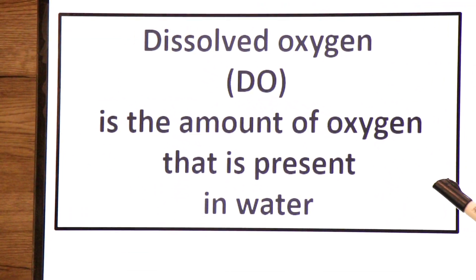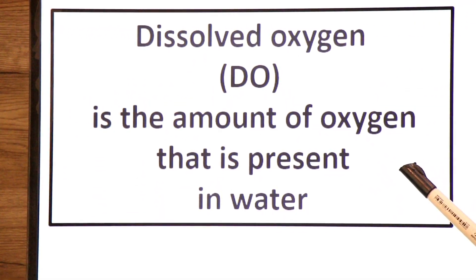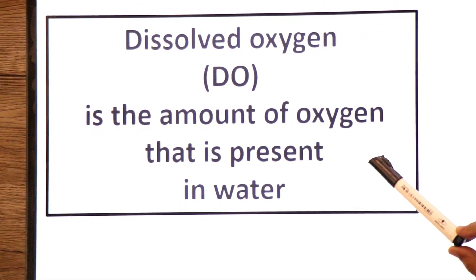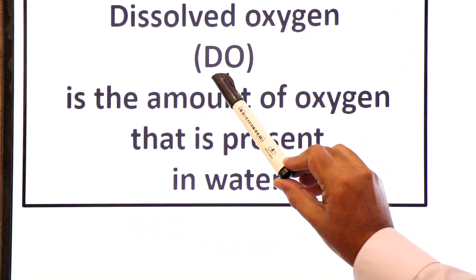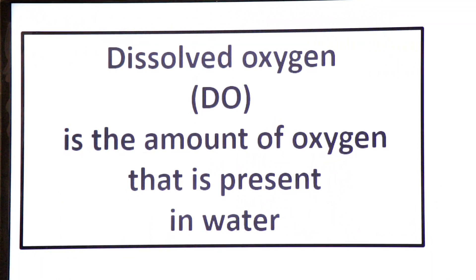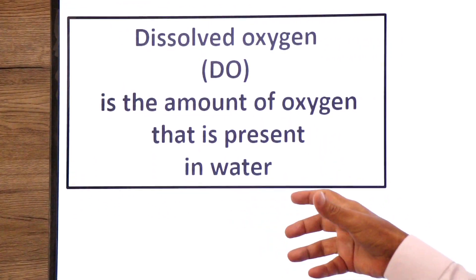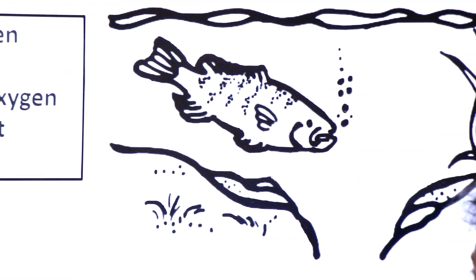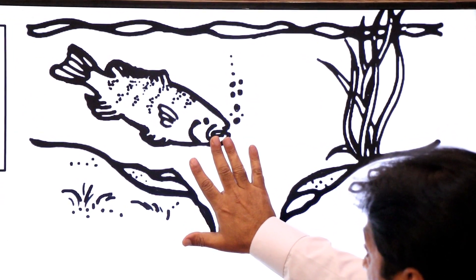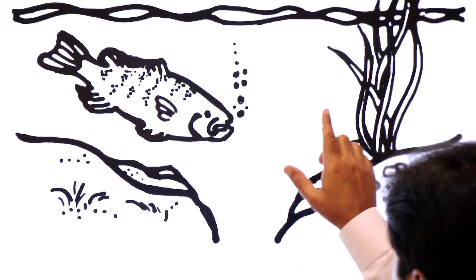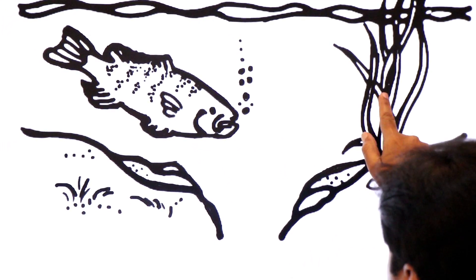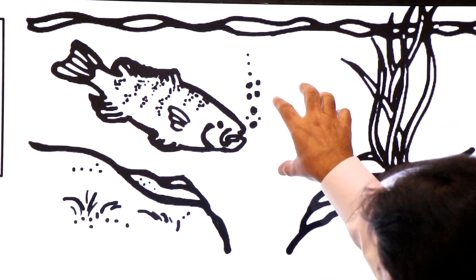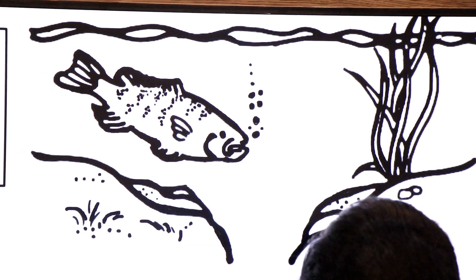And dear students, as I told you for fishes, they take dissolved oxygen. The oxygen in water is called dissolved oxygen. Dissolved oxygen, in short DO, is the amount of oxygen that is present in water. Then where does this dissolved oxygen in water come from? This is the answer. Dissolved oxygen in water - here you can see some aquatic plants. When they do photosynthesis, they release oxygen into the water. This is called dissolved oxygen.